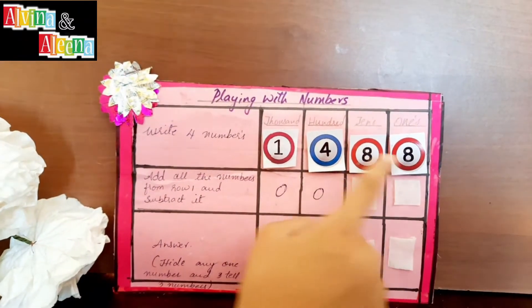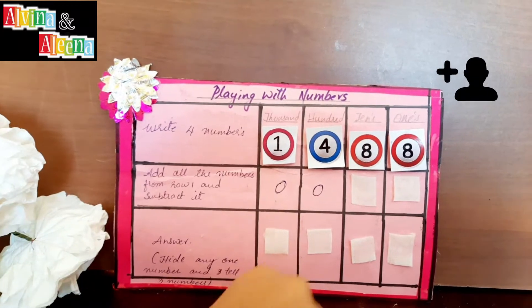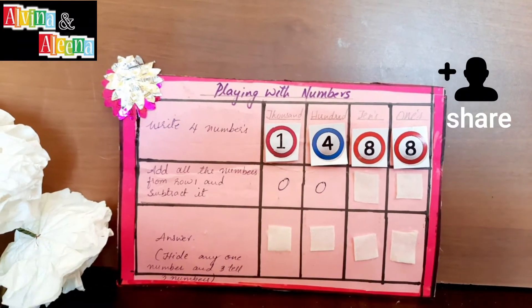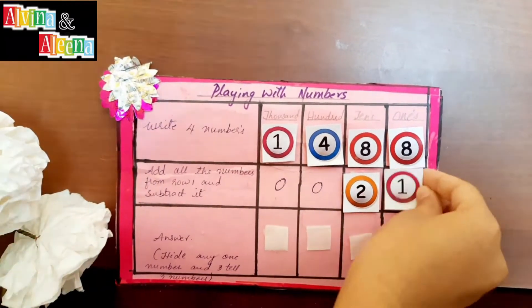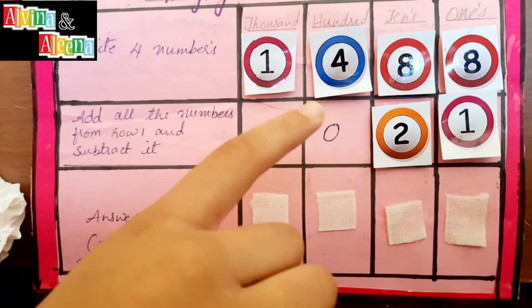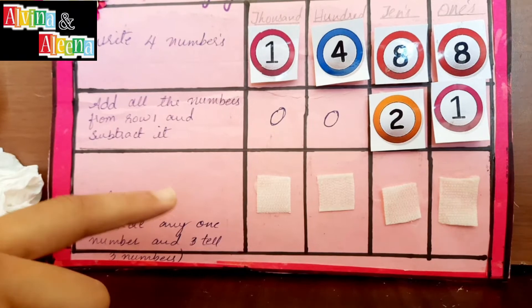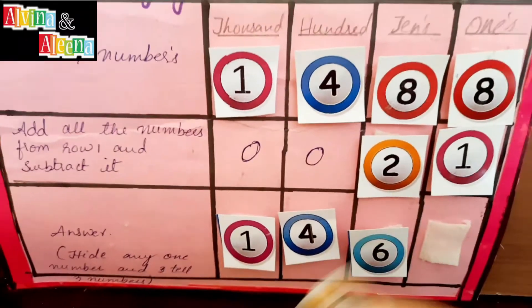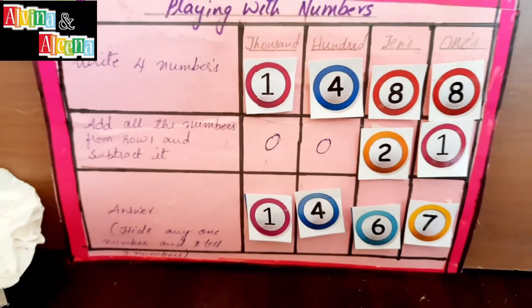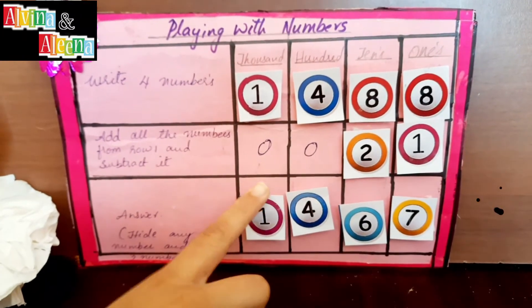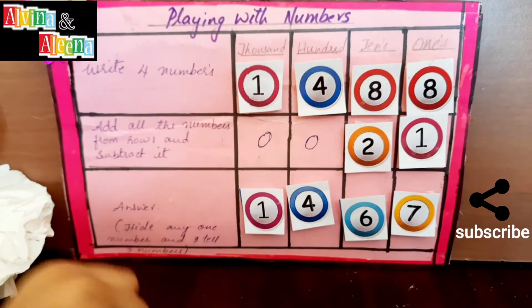The answer is 21. Now subtract 21 from 1488. The answer is 1467. Now ask your friend to hide one number and tell you the other three numbers.